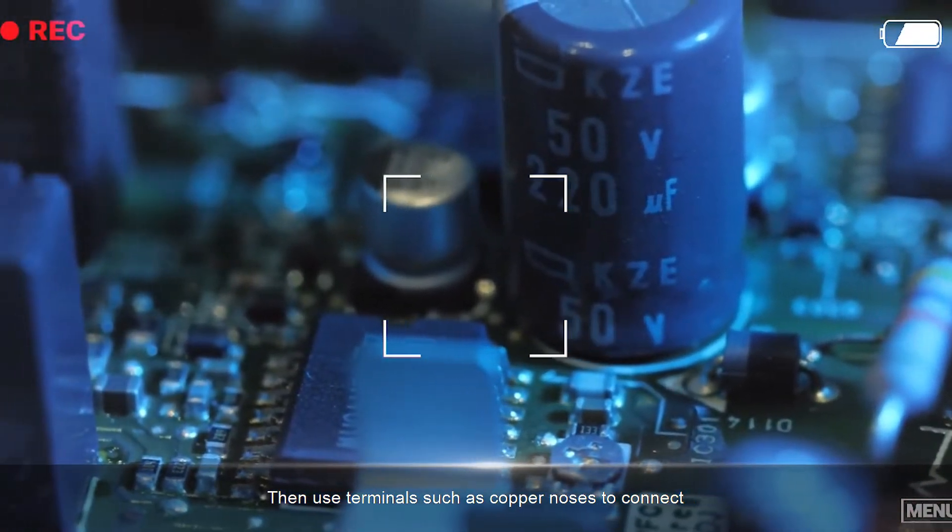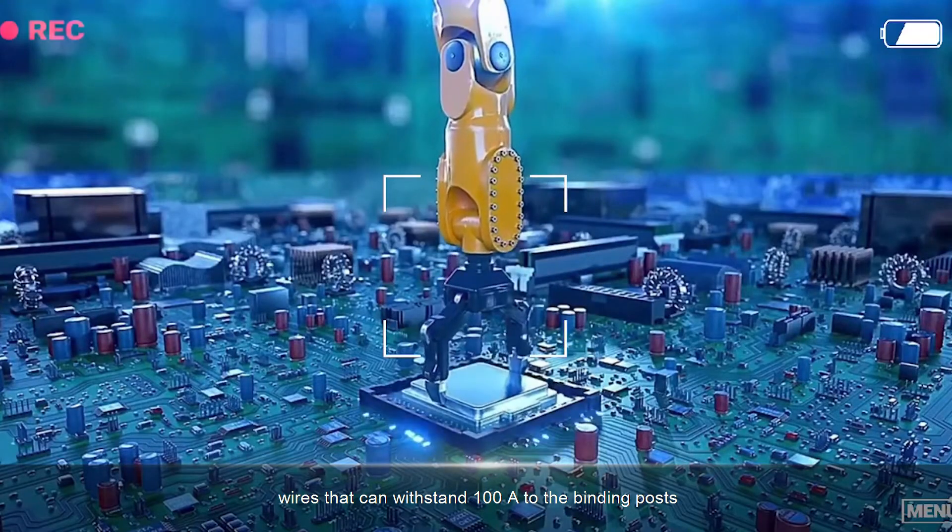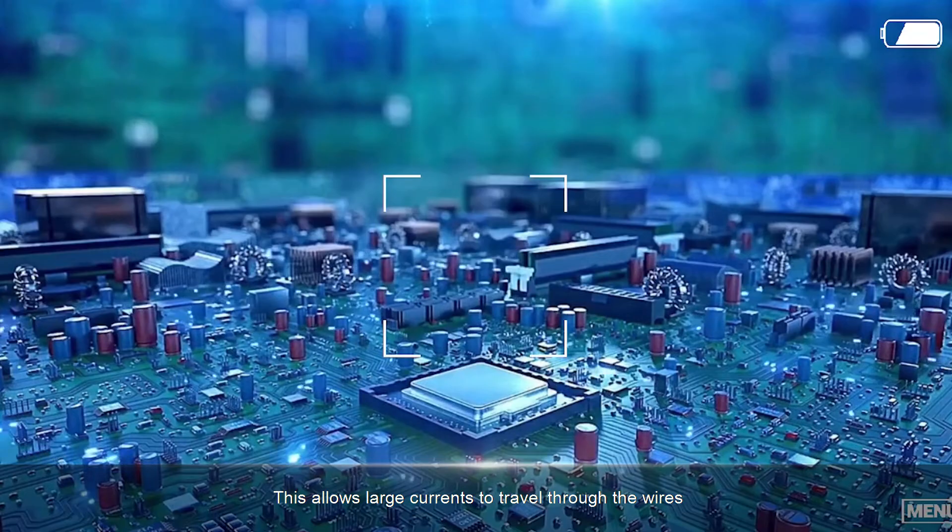Then use terminals such as copper noses to connect wires that can withstand 100A to the binding posts. This allows large currents to travel through the wires.